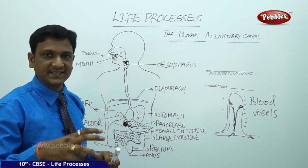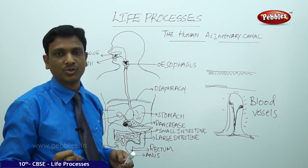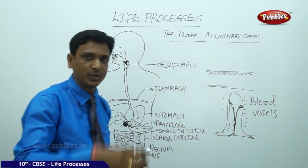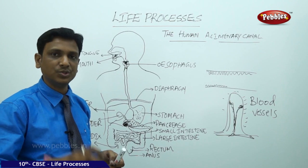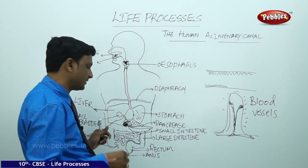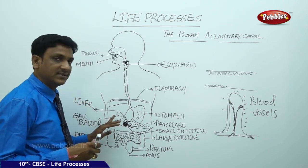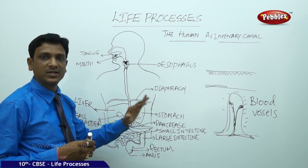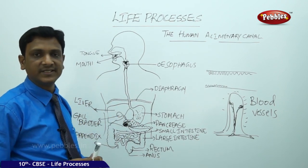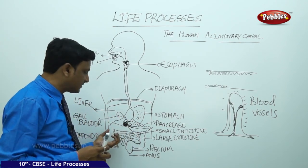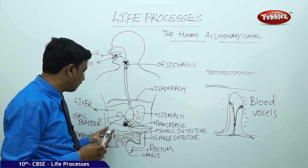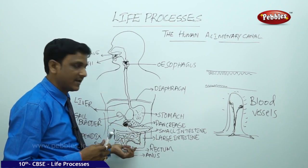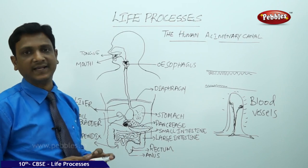From the digested food, nutrients and water are absorbed in the small intestine. The remaining undigested food, along with some unabsorbed nutrients and water, enters the large intestine. In the large intestine, water is reabsorbed back into the body. The undigested food is hardened and moves through the large intestine and colon, reaches the rectum, and is finally excreted through the anus.